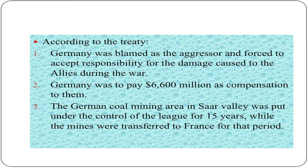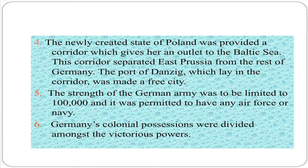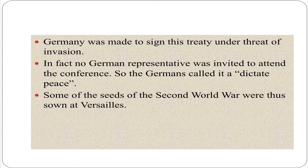Germany was to pay 6,600 million dollars as compensation. The German coal mining area in the Saar Valley was put under the control of the League for 15 years, while the mines were transferred to France for that period. The newly created state of Poland was provided a corridor giving her an outlet to the Baltic Sea, separating East Prussia from the rest of Germany. The port of Danzig, which lay in the corridor, was made a free city. The strength of the German army was limited to one lakh, and it was not permitted to have any air force or navy. Germany's colonial possessions were divided amongst the victorious powers. Germany was made to sign the treaty under threat of invasion; no German representative was even invited to attend the conference. So the Germans called it a diktat peace.